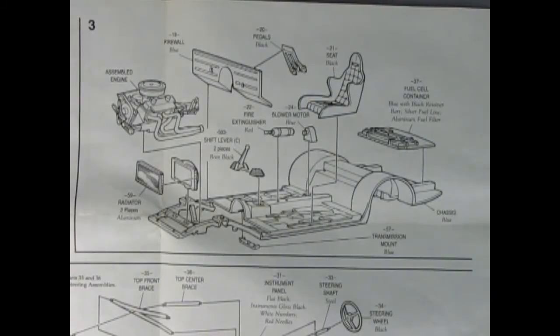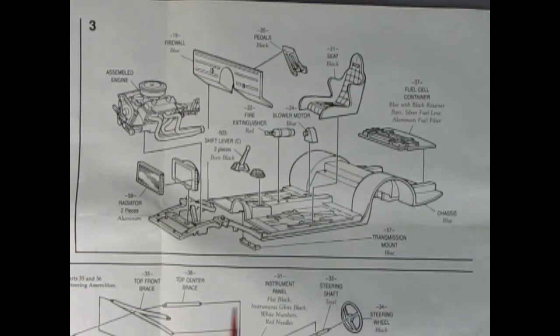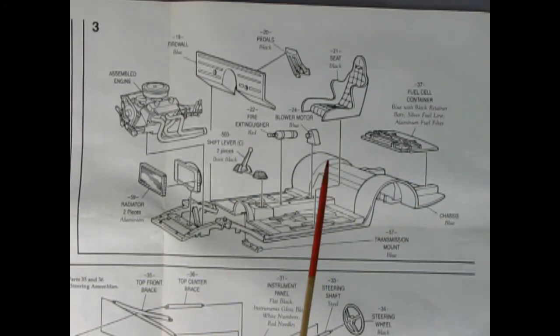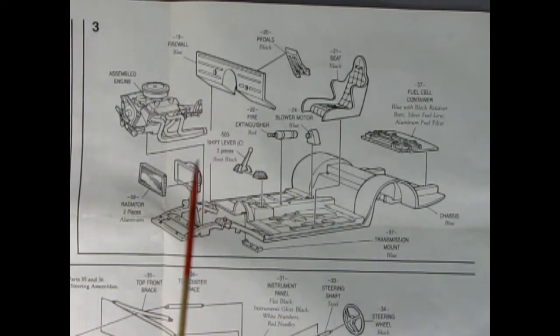Panel three shows our super detailed NASCAR interior. We've got our fuel cell which glues into the back of the chassis, our front seat, pedals, firewall, the engine will drop in place. We've got a two-piece radiator, two-piece shift lever, fire extinguisher and a blower motor. What will they think of next?